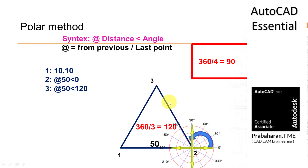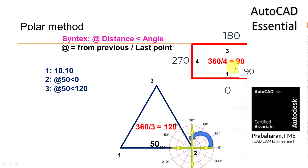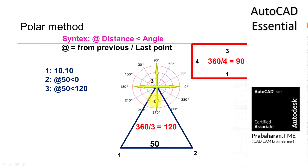We draw line 2 to 3. Similarly, for 3 to 1, the angle is 120 plus 120 equals 240 degree. Just as the rectangle used 0, 90, 180, 270 — each line adding 90 — here in the triangle, line 1 to 2 is 0, line 2 to 3 is 120, and line 3 to 1 is 240 degree. This is the universal concept to find out the angle between lines.